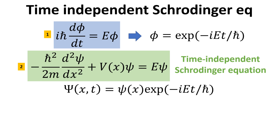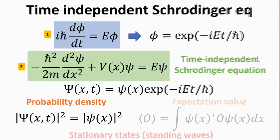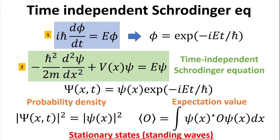The wave function solution to the time-dependent Schrödinger equation, big psi, equals small psi — which depends only on x — multiplied by an exponential factor which depends only on t. Although the wave function big psi has an explicit time dependence, the probability density, given by the product of big psi with its complex conjugate, is time-independent. This is because the exponential time-phase factor drops off when multiplied by its complex conjugate. Similarly, the expectation value of any observable will also be time-independent. Thus, we call the wave function big psi obtained via this method a stationary state.